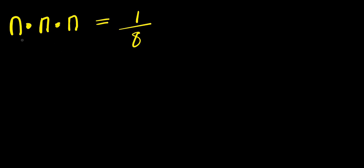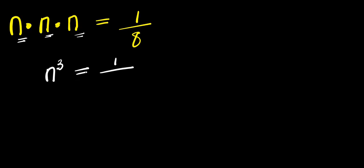Hello, how to solve this problem. This is n times n times n equals 1 divided by 8. Now, n times n is n² times n, this is n to the power of 3, and this equals 1 divided by 8.